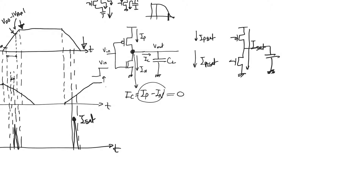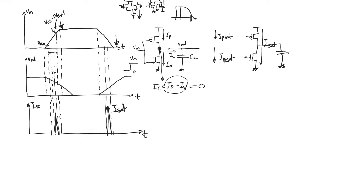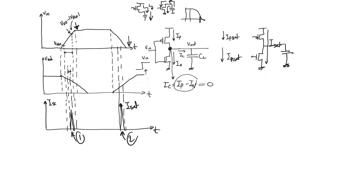So why is this bad? Because it increases delay, but also because it represents power dissipation. We are drawing power from supply and this power is going nowhere — it is not being stored in the capacitor; it is just current flowing through resistors to ground. To calculate this power dissipation, we calculate the energy dissipated during each transition event. The energy dissipated in event one is the power drawn from the supply integrated over time — equal to the area under the triangle.